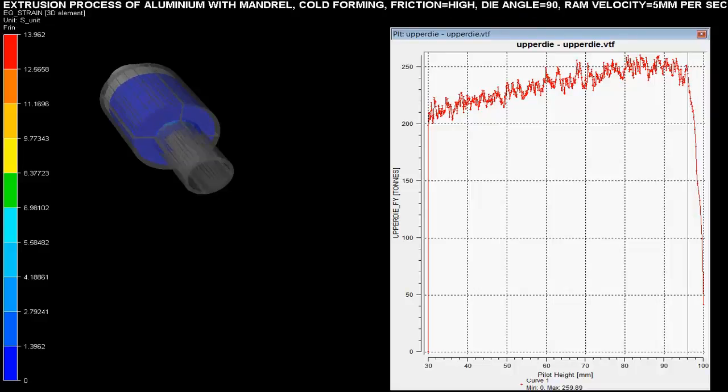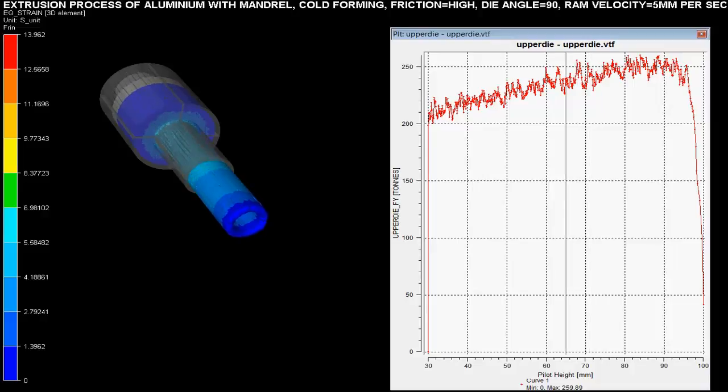In this video you can see the extrusion process of aluminum pipe which comprises of a mandrel in the extrusion die. The process is called extrusion where different parameters are controlled based on given specifications.